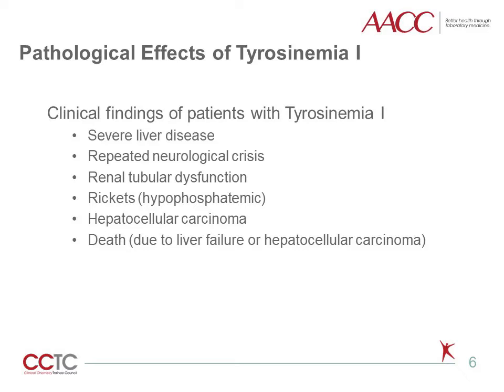Tyrosinemia 1 is usually suspected in individuals with positive newborn screening for the presence of succinylacetone and elevated tyrosine. However, in cases where these metabolites are not detected by newborn screening, untreated tyrosinemia 1 presents with severe liver disease in young children, usually in the first 12 months. These children may have episodic neurological crises, which include altered mental status, peripheral neuropathy, pain in the abdominal regions, and sometimes respiratory failure requiring mechanical ventilation.